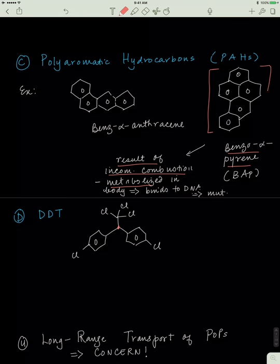I like drawing benzo-alpha-pyrene on exams because it's a really easy structure to memorize. But you could also look at benzo-alpha-anthracene and draw that as well. I think there's three benzene rings and then the fourth one is just sticking on the side.